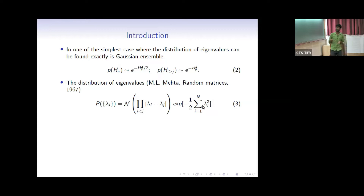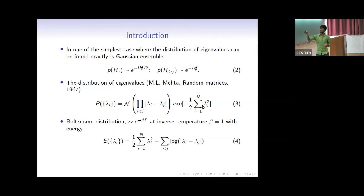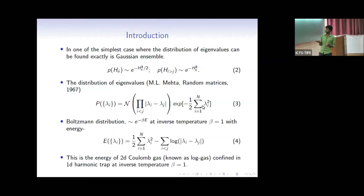If two eigenvalues are the same, the distribution is actually zero — that means they are very correlated. Comparing this probability distribution with the Boltzmann distribution of the form e to the power minus beta E, the energy corresponding to this distribution is minus half of lambda_i squared plus a logarithmic interaction term. This gives us the system actually known as log gas.